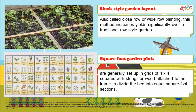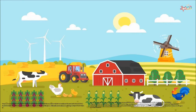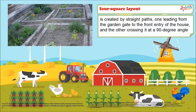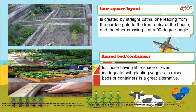We also have a four square layout, created by straight paths — one leading from the garden gate to the front entry of the house and the other crossing it at a 90 degree angle. For raised bed containers, those having little space or inadequate soil can plant vegetables in raised beds or containers as a great alternative.